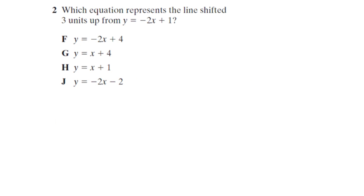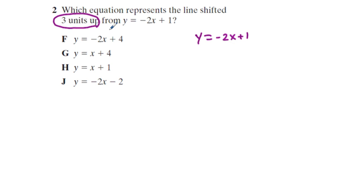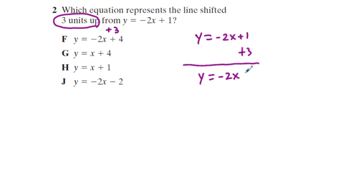Practice problem 2: which equation represents the line shifted three units up from y equals negative two x plus one? To shift up three units, we add three to the y-intercept: one plus three equals four. The new equation is y equals negative two x plus four. Correct answer: F.